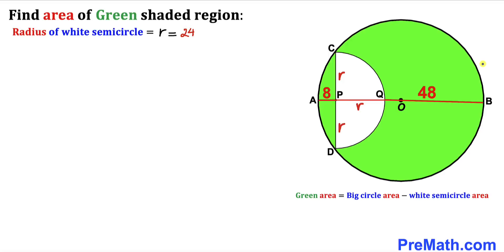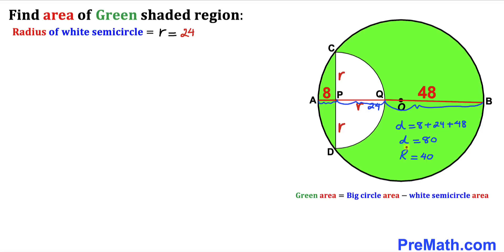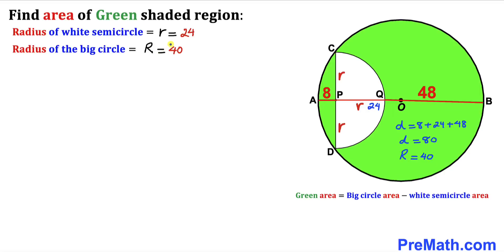Now let's focus on the big circle. Its diameter AB equals the sum of AP (which is 8), plus PQ (which is 24), plus QB (which is 48). So the diameter is 80 units, and therefore the radius of the big circle is half of that, which is 40 units.